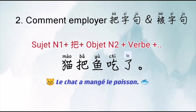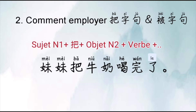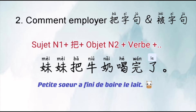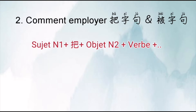Deuxième exemple : MÉMÉ BA NIOU NAI HE WAN LE. MÉMÉ, c'est petite sœur, donc c'est le sujet. NIOU NAI, c'est l'objet, qui veut dire du lait. HE, c'est le verbe qui veut dire boire. WAN LE, c'est un complément supplémentaire pour dire que l'action est finie. Donc cette phrase veut dire : petite sœur a bu le lait, a fini de boire le lait.